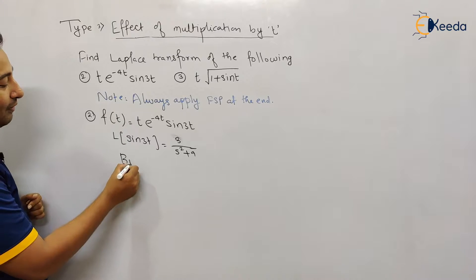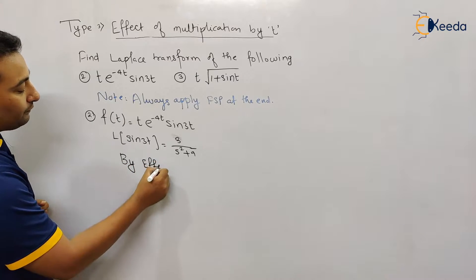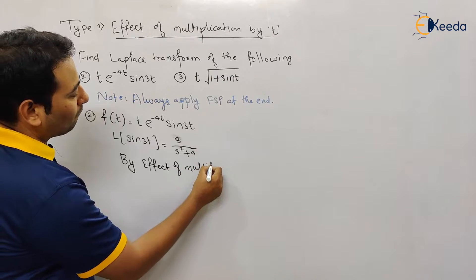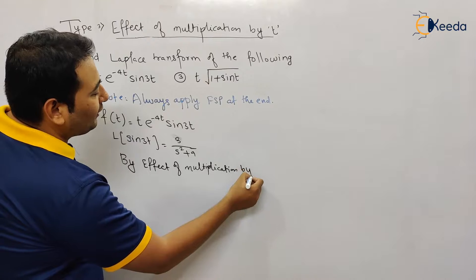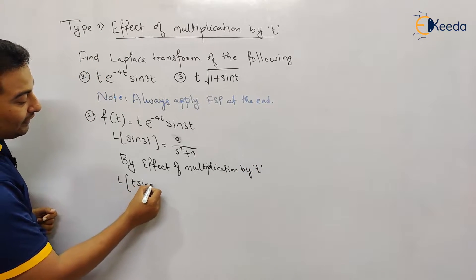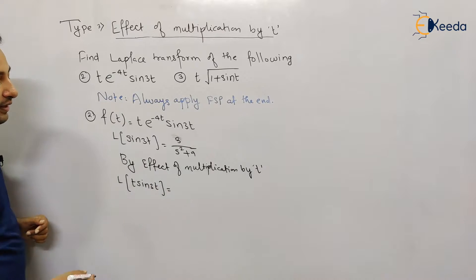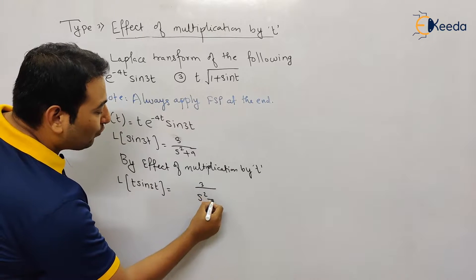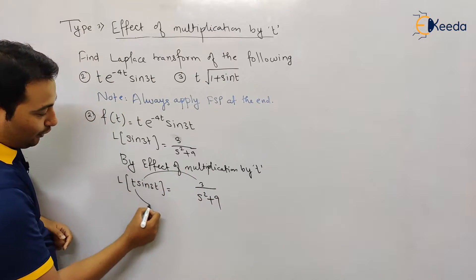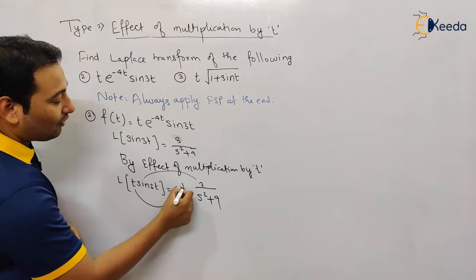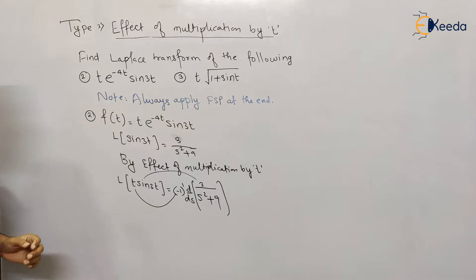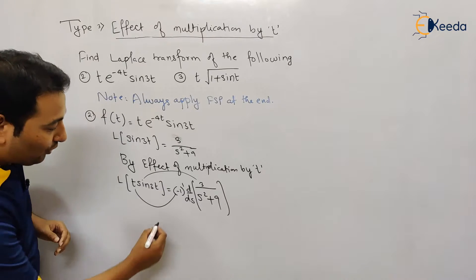We're left with the effect of multiplication by t. So, Laplace of t·sin(3t): since Laplace of sin(3t) is 3/(s² + 9), and due to this t we're going to write (−1)^1 · d/ds — that means we're going to differentiate it once. Let's do it, it's very simple.